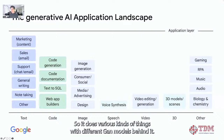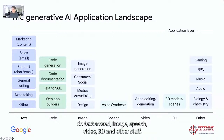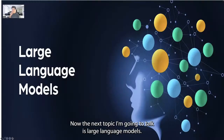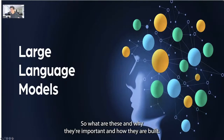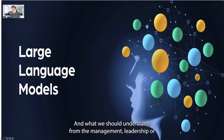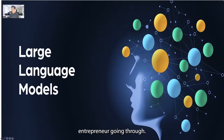Generative AI works with various kinds of things using different GAN models behind it — text, code, image, speech, video, 3D, and other formats. The next topic is large language models: what are these, why they're important, how they are built, and what we should understand from a management, leadership, or entrepreneur point of view.